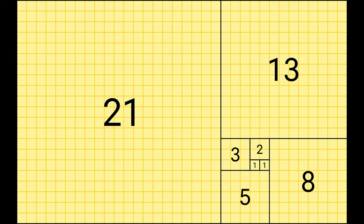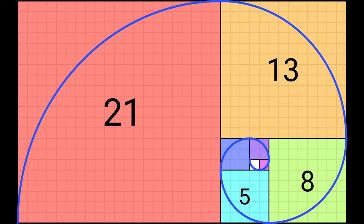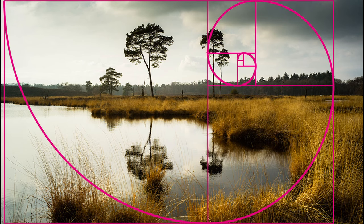The Fibonacci sequence goes: 1 plus 1 is 2, 2 plus 1 is 3, 3 plus 2 is 5, 5 plus 8 is 13, and so on. If you connect the corners of these tiles together you get the spiral pattern which appears quite often in nature. Some artists have convinced themselves that this is some magical sequence and that applying the spiral gives you a great composition.